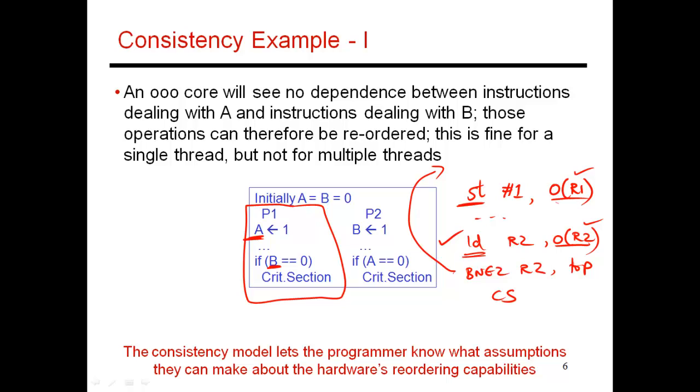You issue the load. What you're going to see is the value of B, which is currently 0. So this load is going to put a 0 into R2. And this thread is going to say, since R2 is 0, I can now enter the critical section.